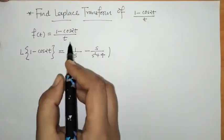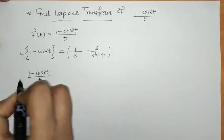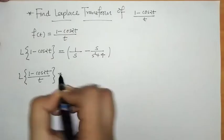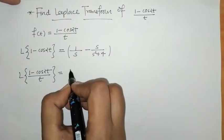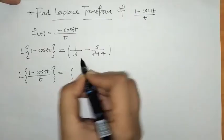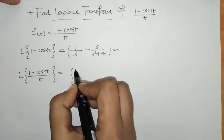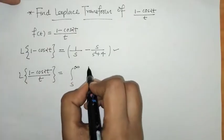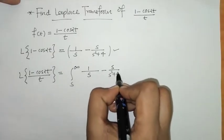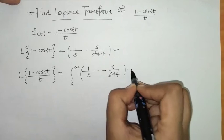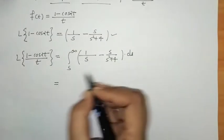Now we have to divide (1 - cos(2t)) by t and find the resulting Laplace. By the division-by-t rule, we take the integral of the Laplace we found earlier, with the limit from s to infinity, of 1/s minus s/(s² + 4), with respect to s.